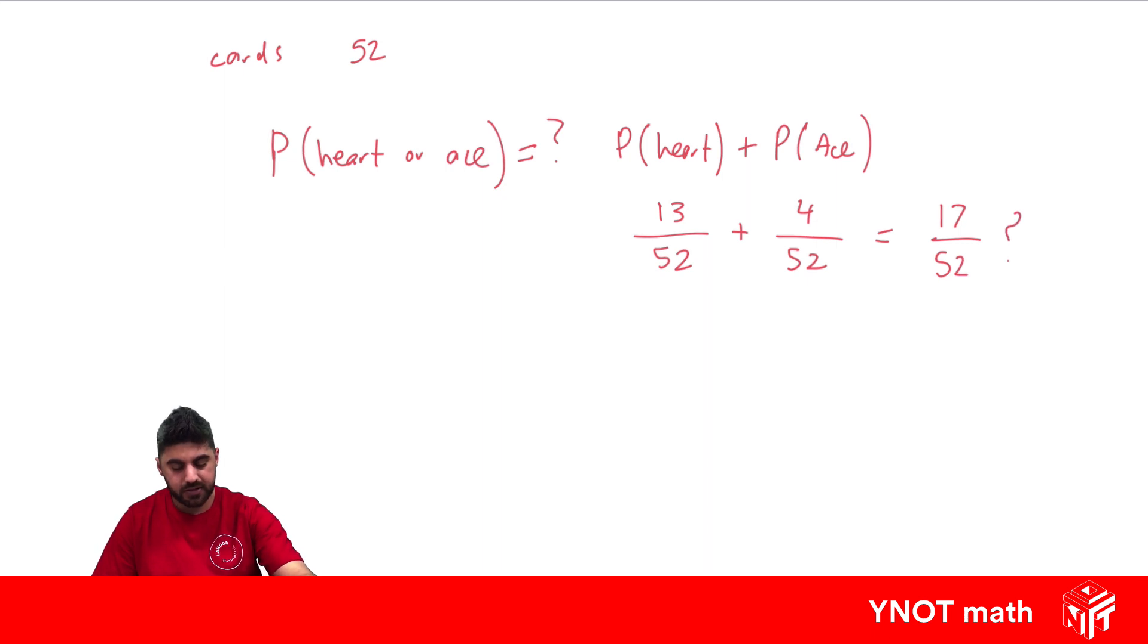Is that correct? Because what we've done here is that inside our 13 hearts, one of them is an ace. And inside these 4 aces, one of them is a heart. So we've actually counted that card twice. So to make this correct, we've got to subtract any overlapping cards, or any overlapping events. And only one of them is overlapping, it's the ace of hearts.